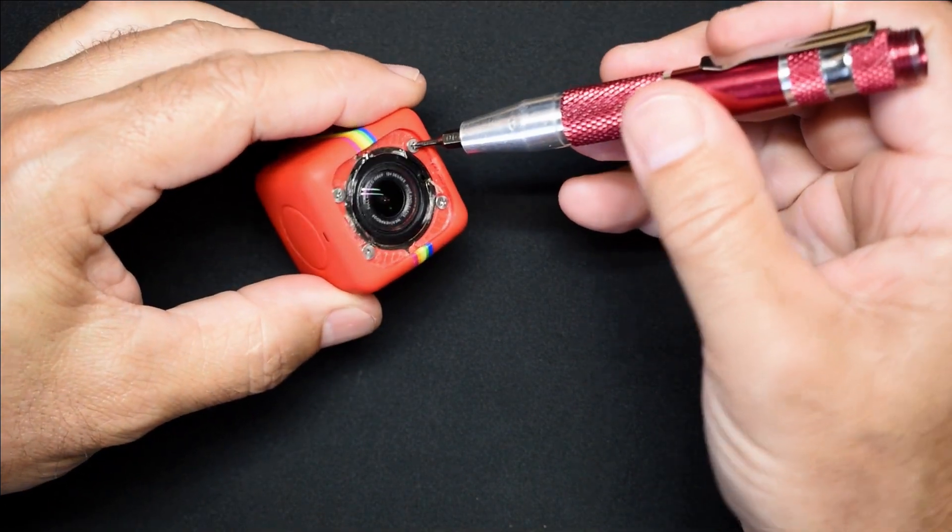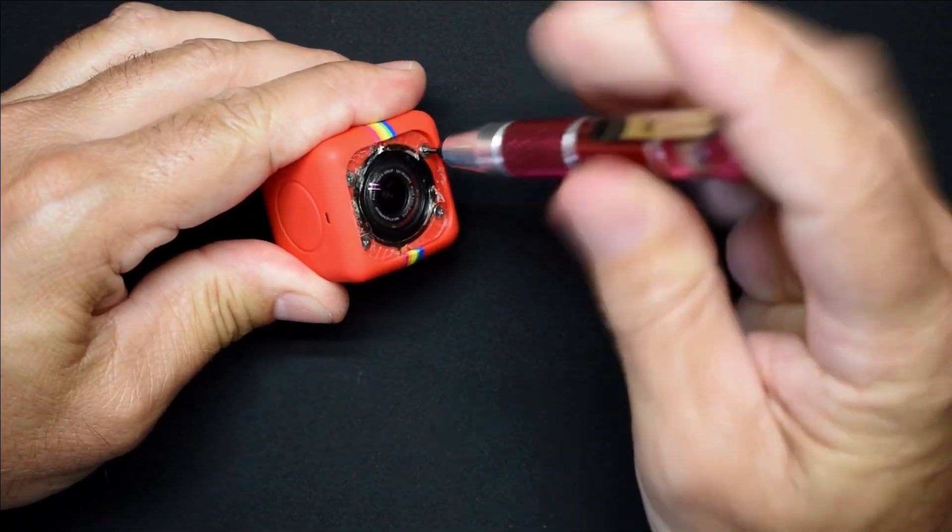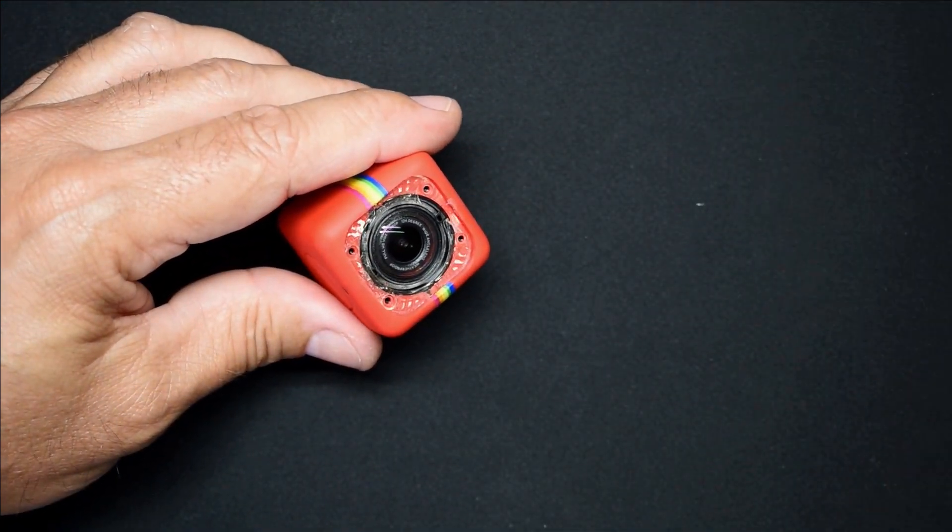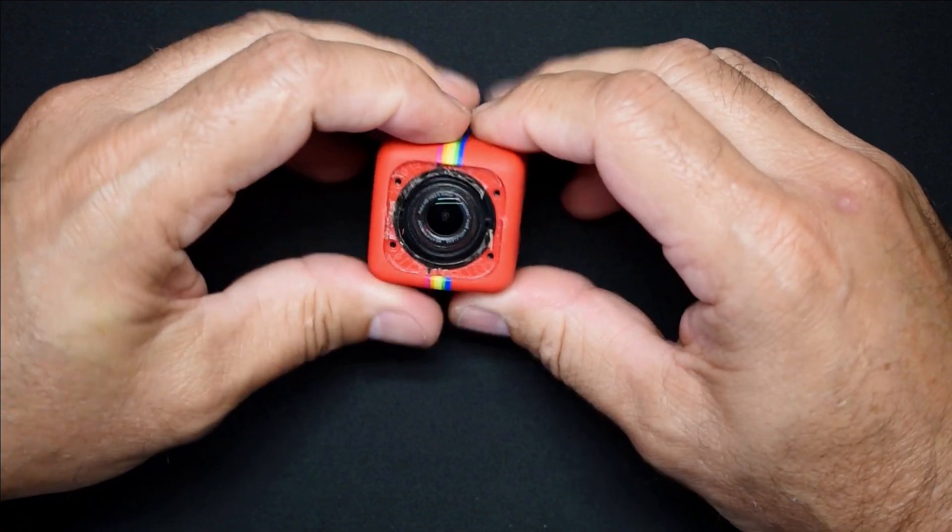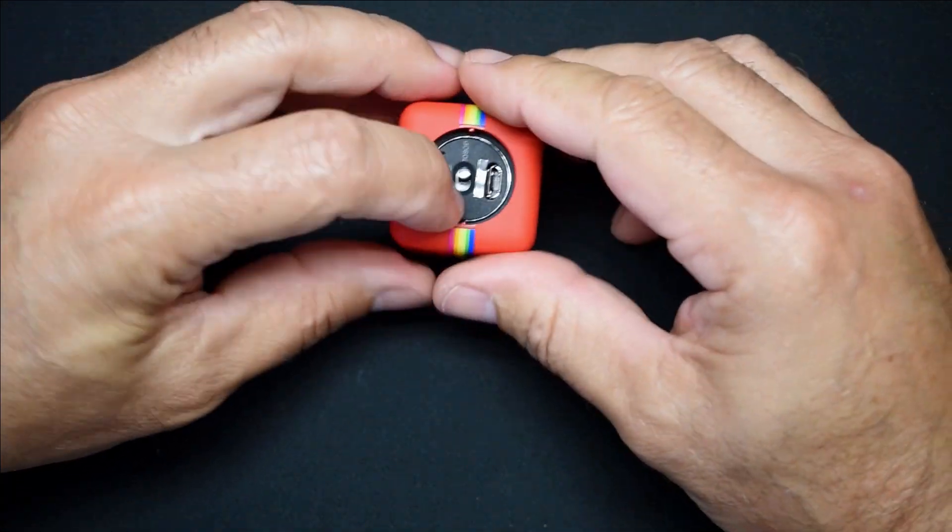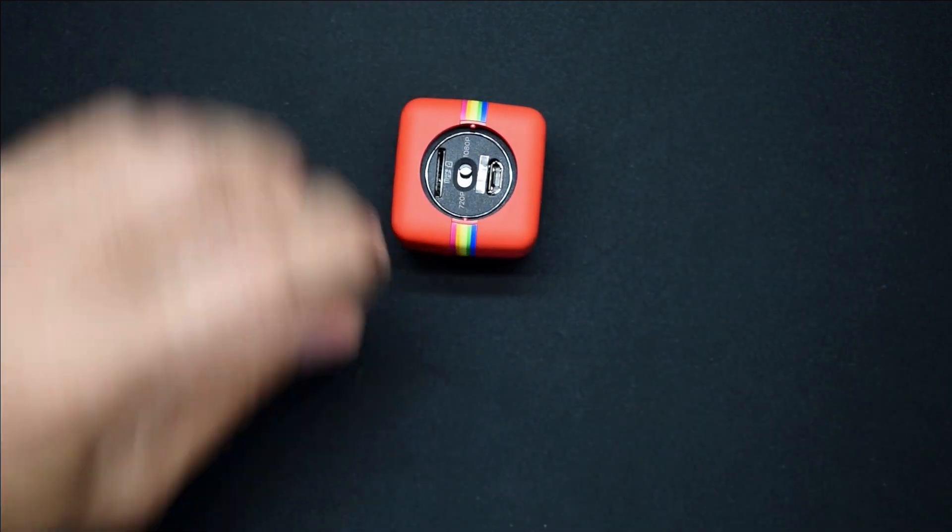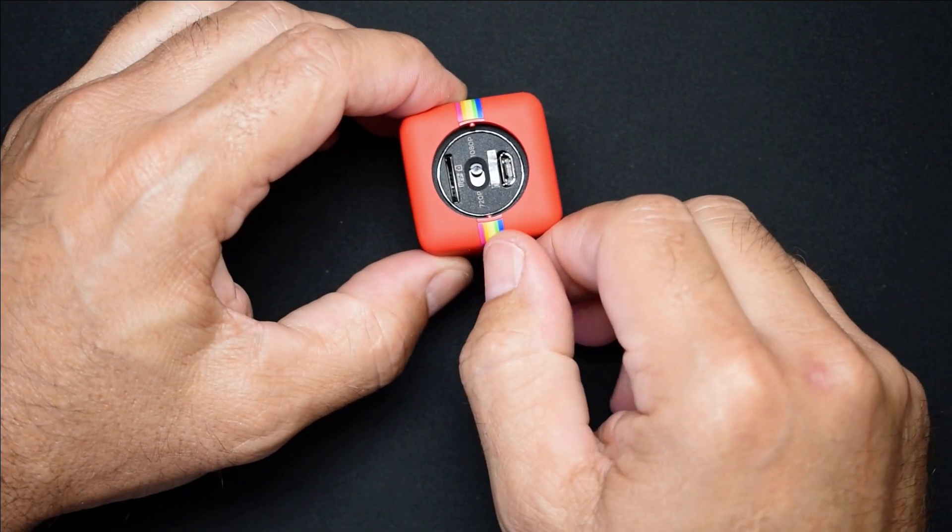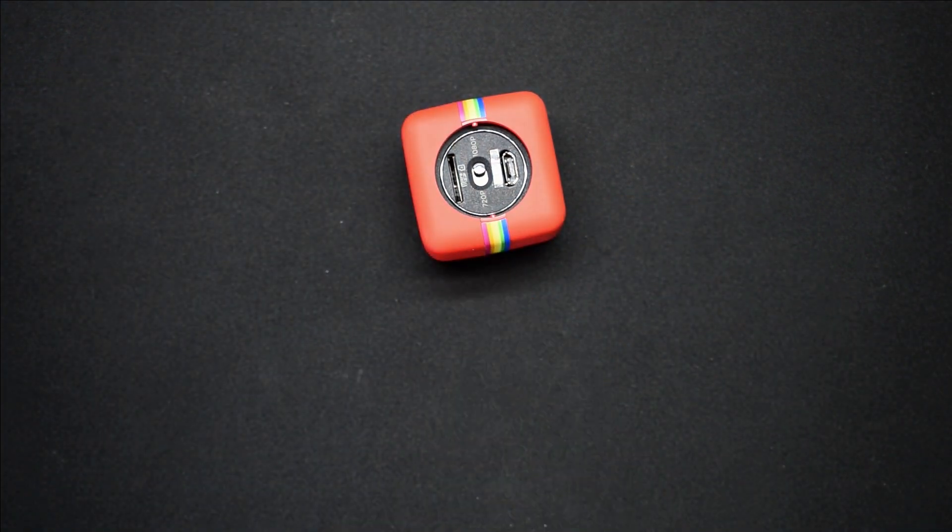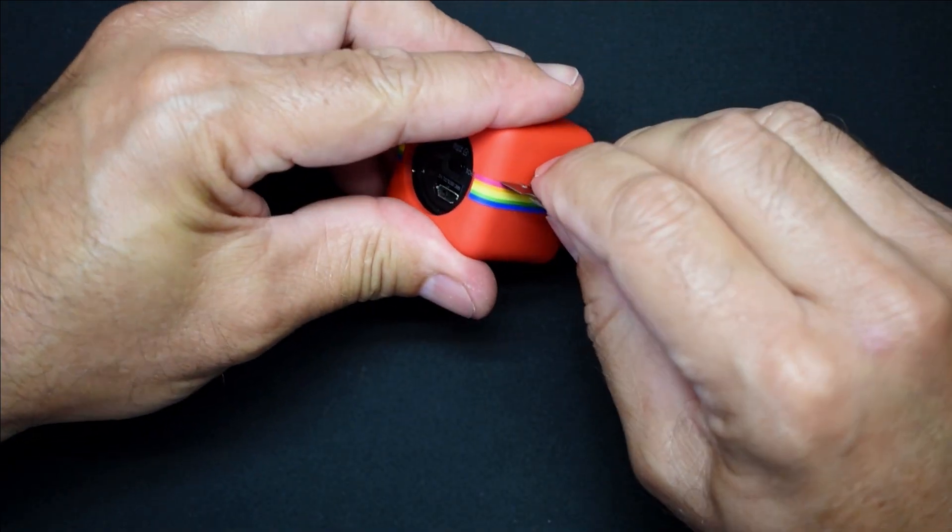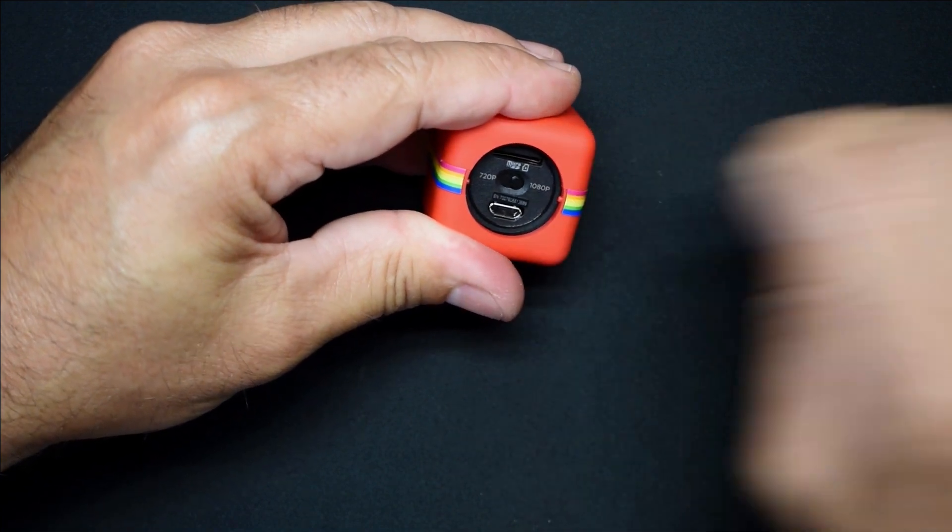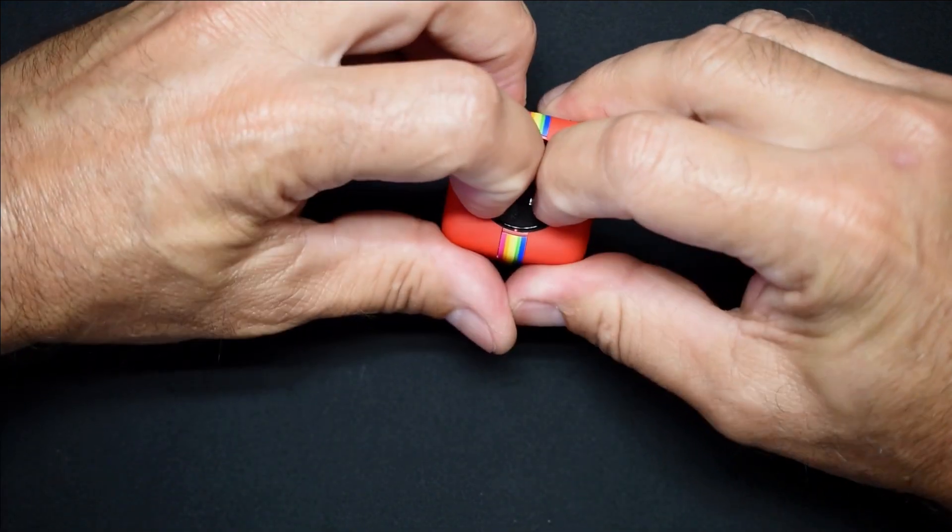Now I'm going to take a Phillips. Okay, now let's see if I can pull this apart. You can see there's a space right here above that rainbow band. I'm going to get my single edge razor blade and shove it in there. Let's be careful when you do this that you don't cut yourself.